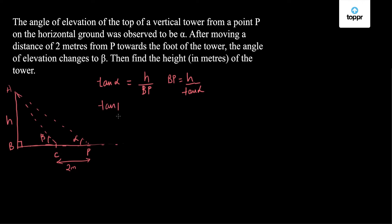Similarly, in right triangle ABC, I have tan beta is equal to H upon BC, so BC is equal to H upon tan beta. I know that BP minus BC is 2 meters, so I will make use of this fact: BP minus BC is equal to H times 1 upon tan alpha minus 1 upon tan beta.